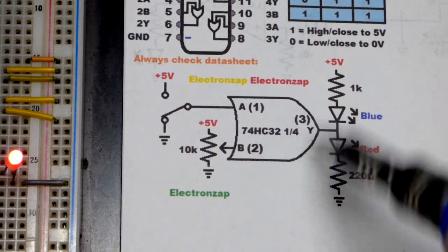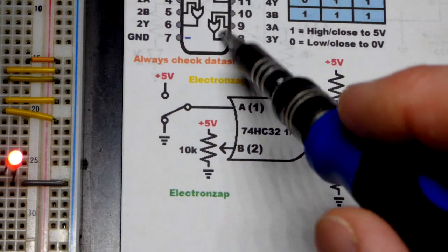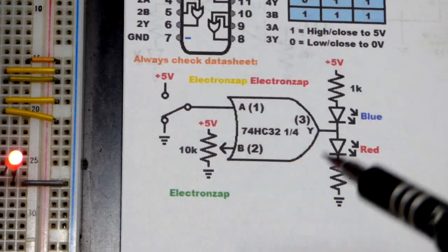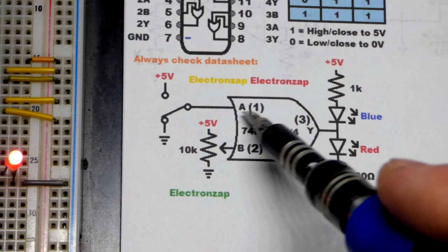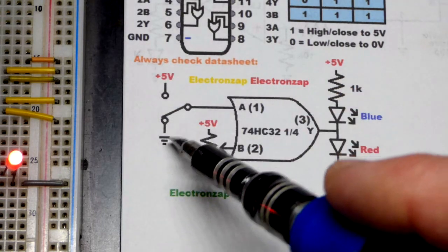And here is the basic schematic. So when you see an OR gate symbol like this, usually they think you're going to use an OR gate from an integrated circuit like this. But we're using the top left one. So in any case, we got A there, that jumper. I just moved it manually. We could use a push button switch.